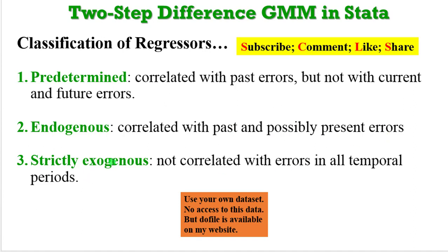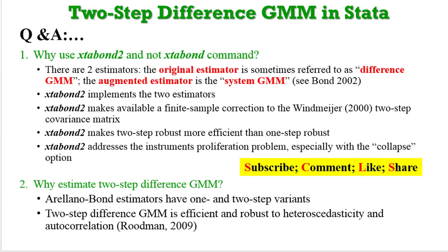On the screen I have two questions with answers. First, why use xtabond2 instead of xtabond? We have two estimators: the original difference GMM and the augmented system GMM. Xtabond2 can implement both, makes available the finite sample correction to the Windmeijer two-step covariance matrix, makes two-step robust more efficient than one-step robust, and addresses instrument proliferation especially with the collapse option. Second, why estimate two-step difference GMM? The Arellano-Bond estimators have one-step and two-step variants, and the two-step difference GMM is efficient and robust to heteroscedasticity and autocorrelation — quoting Roodman, 2009.